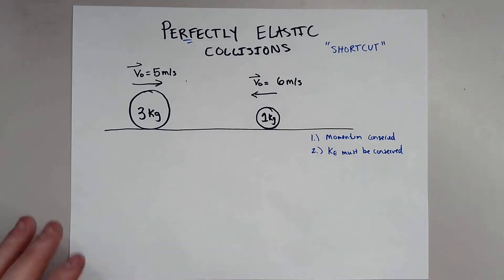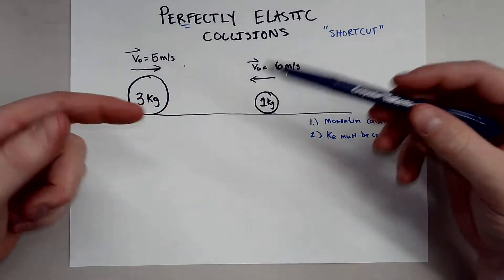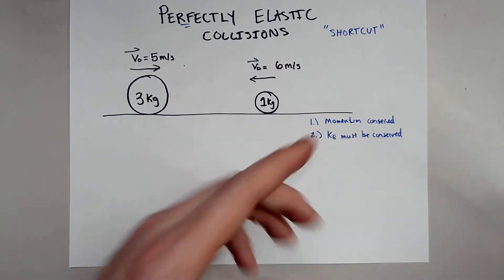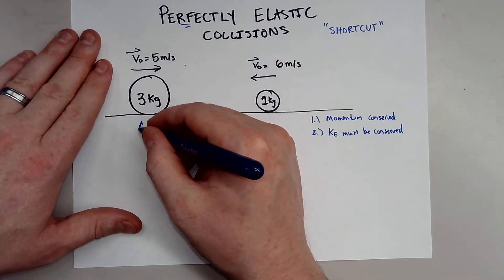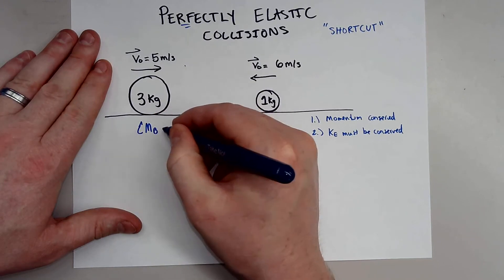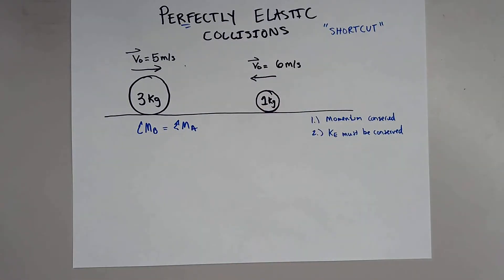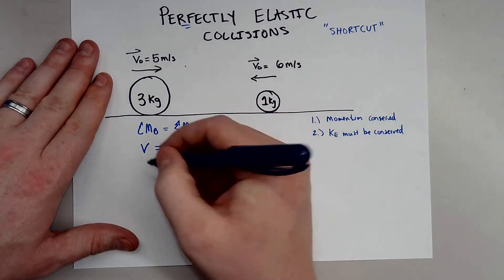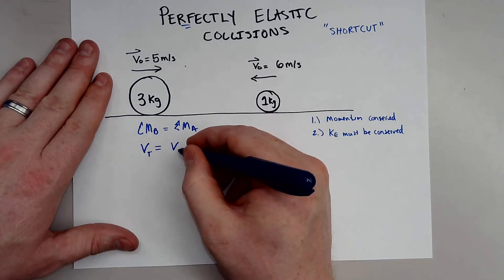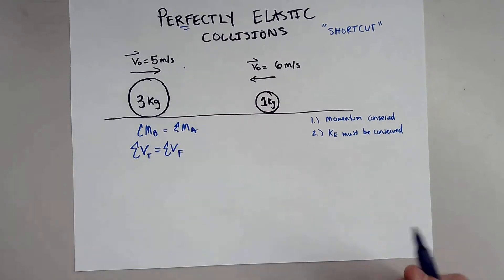Now, this is actually how the shortcut happens. After these two objects hit — they could hit and bounce back, they could hit and keep going forward, and one can go in the same direction — we know this: the summation of the masses before the collision is equal to the summation of the masses after the collision. So the mass of the system is not changing.